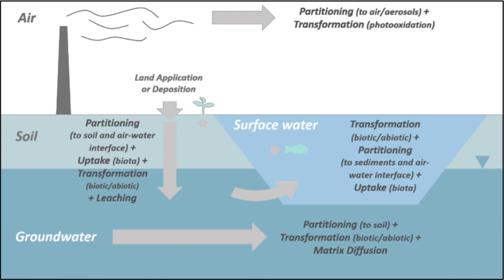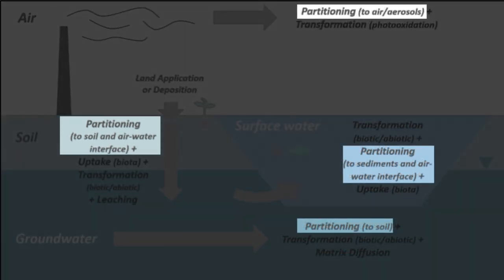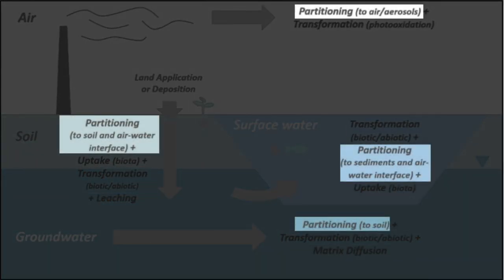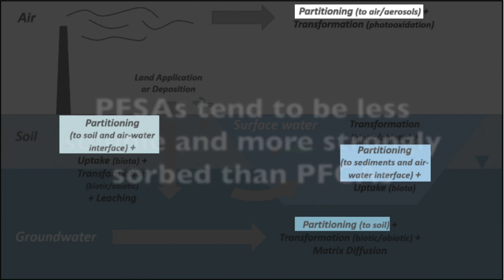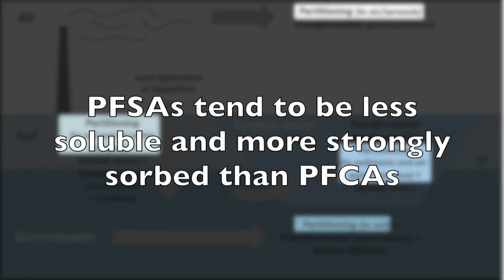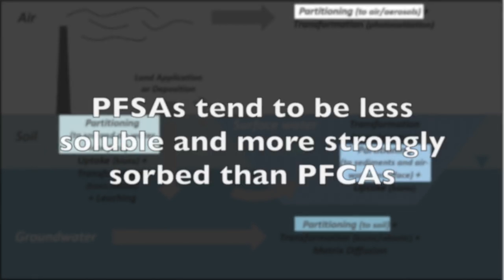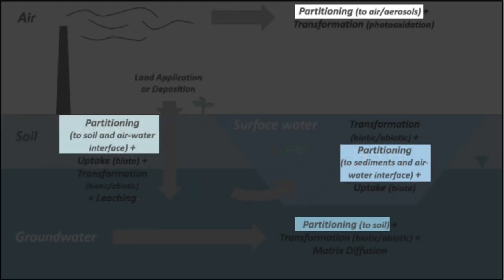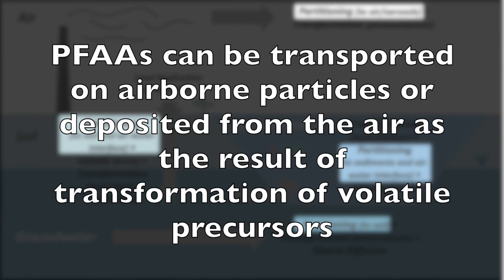PFAS fate and transport processes include partitioning between environmental media, transport, and biotic and abiotic transformation. Many factors affect where PFAS end up or partition in the environment. In general, PFSAs tend to be less soluble and more strongly absorbed than PFCAs, and longer-chain PFAAs tend to be less soluble and more strongly absorbed than shorter-chain PFAAs. PFAAs are less volatile than many other groundwater contaminants, but sometimes are transported on airborne particles or may be deposited from the air as a result of transformation of volatile precursors.